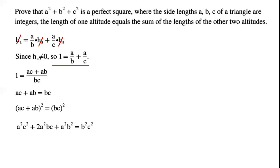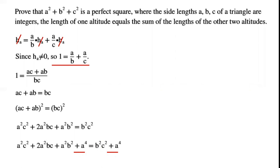By squaring and expanding both sides of the equation, we have A squared C squared plus A squared BC plus A squared B squared equals B squared C squared. Now we add A to the power of 4 on both sides. The reason for this is we already have A squared C squared and A squared B squared — if we add A to the power of 4, we can create A squared plus B squared plus C squared.